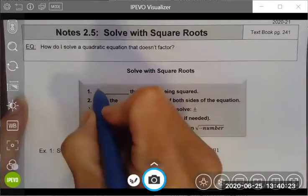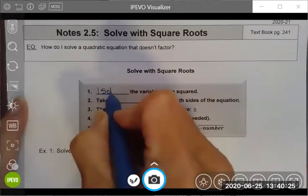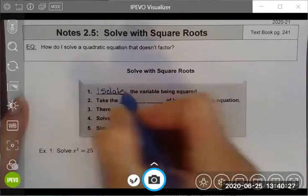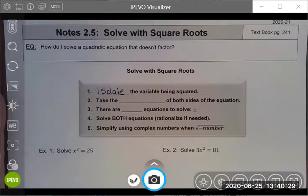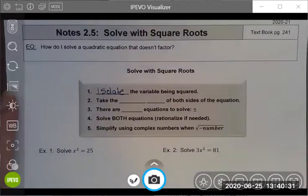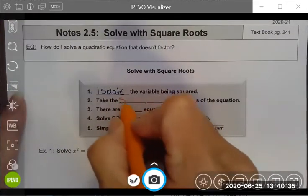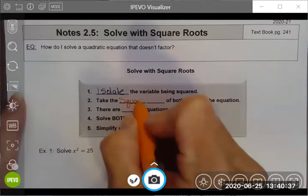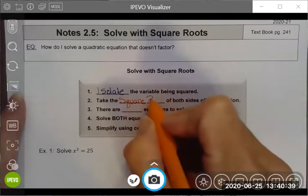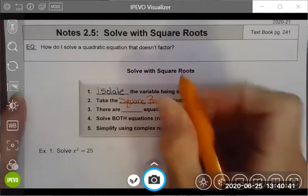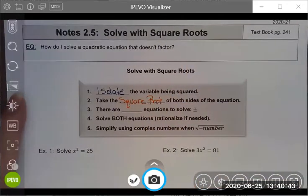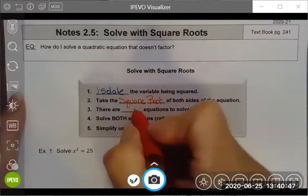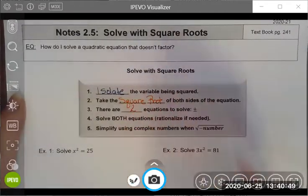Let's look at the steps. First, we're going to isolate our squared variable, the ax squared. Then we take the square root of both sides. When we take the square root of both sides, we remember that there are two solutions, the positive and the negative solution.